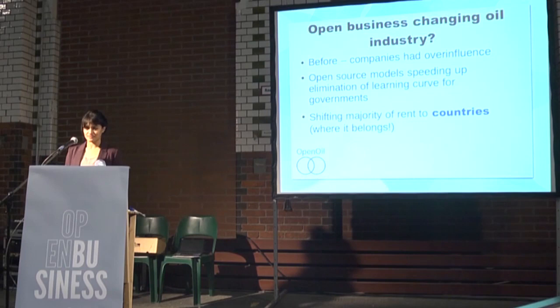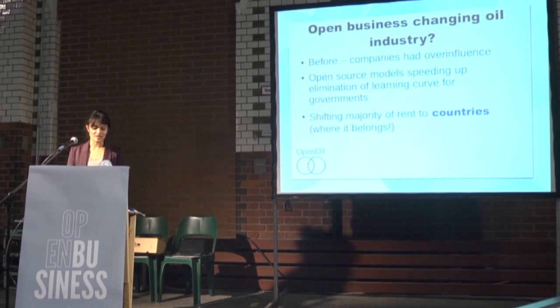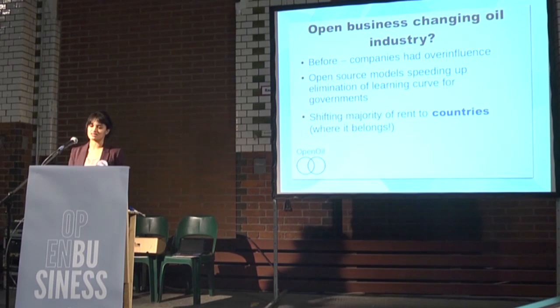When there have been high oil prices, it's been the companies that have been benefiting. We work on the model that the oil industry should evolve into more of a service industry — a government pays a company to do a particular role, they make a profit, that's fine. But when there are particularly high oil prices, it's the government that should be benefiting. The excess money made on top of normal profits is called rent, and we're trying to shift the majority of this rent to the countries where it belongs.